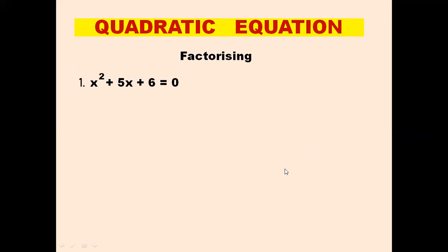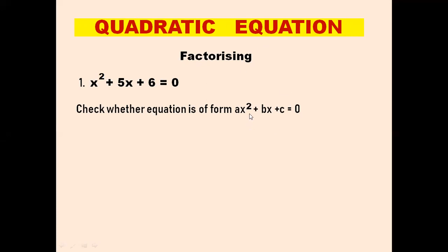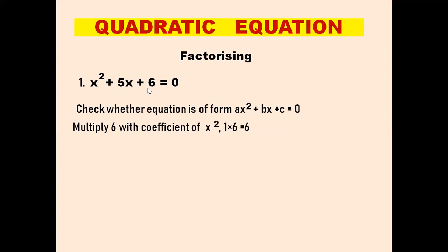Now we come to the factorizing method. The quadratic equation is x² plus 5x plus 6 equals to 0. First we check whether it is of the form ax² plus bx plus c equals to 0. Yes it is, because the power of the variable is 2. Here a equals to 1, b equals to 5, and c equals to 6. Now we multiply c, which is 6, with a, which is 1, so we get 6. We multiply 6 with the coefficient of x², which is 1, so we get 6.